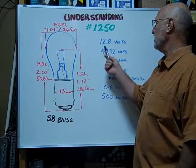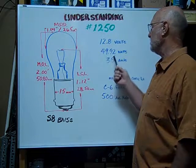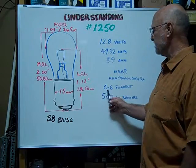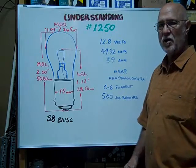The volts are rated at 12.8. The watts are 49.92. Amps are 3.9. The filament type is a C-6. The average rated hours are 500 hours.